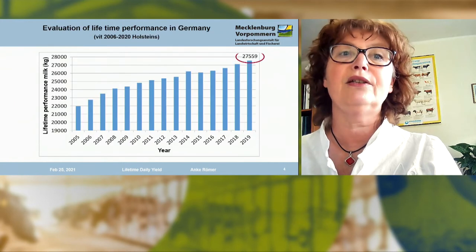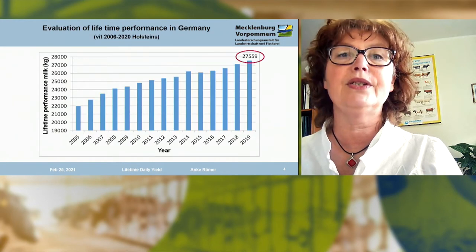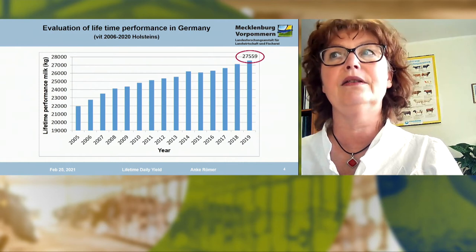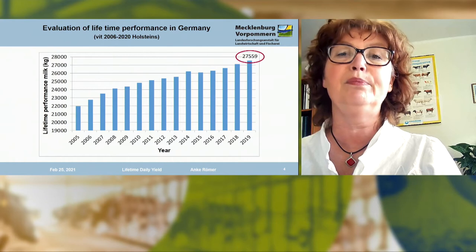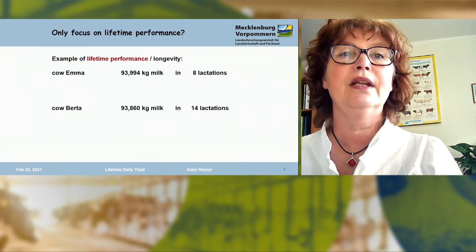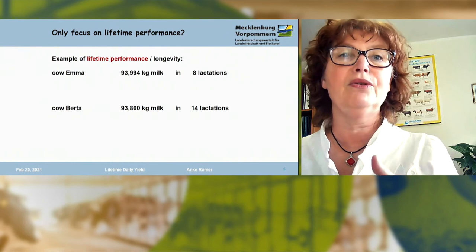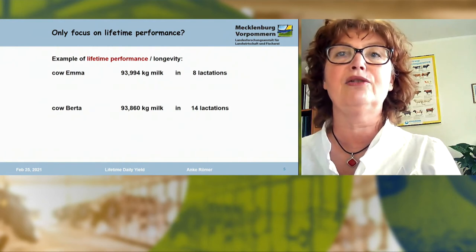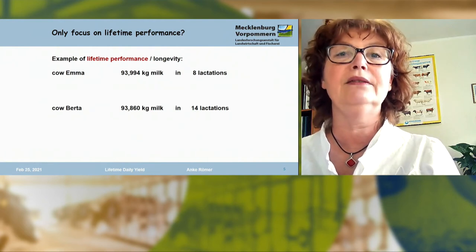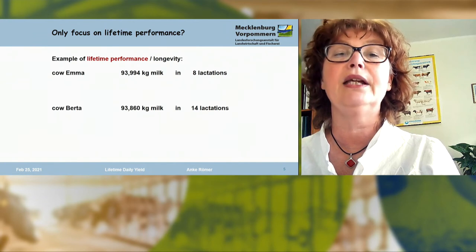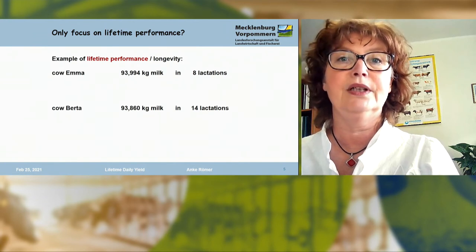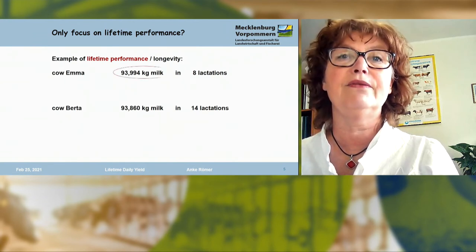Short introduction: lifetime performance has increased every year in Germany and I believe on your farm too. I will give you an example of two cows with high lifetime production. Cow one, I called Emma, gave 94,000 kilograms of milk within eight lactations — that's 11,700 kilograms per lactation.